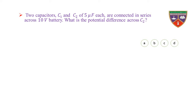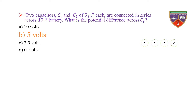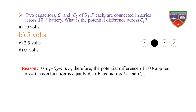Two capacitors C1 and C2 of 5 microfarad each are connected in series across a 10-volt battery. What is the potential difference across C2? Option A: 10 V, option B: 5 V, option C: 2.5 V, option D: 0 V. The key is 5 volts; the correct option is B. Reason: As C1 = C2 = 5 μF, the 10V is equally distributed across C1 and C2. Hence, the potential across C2 is 5 volts.